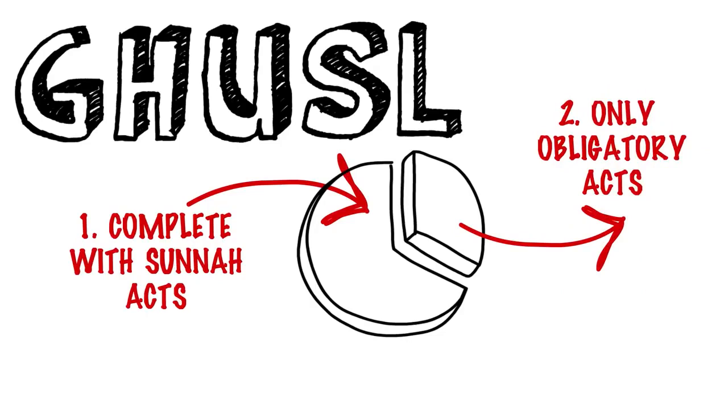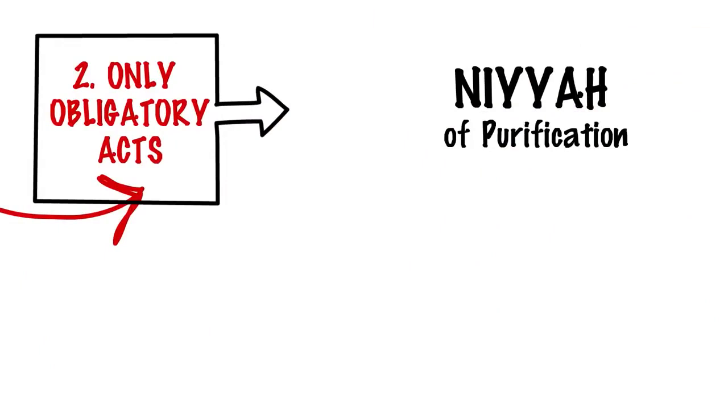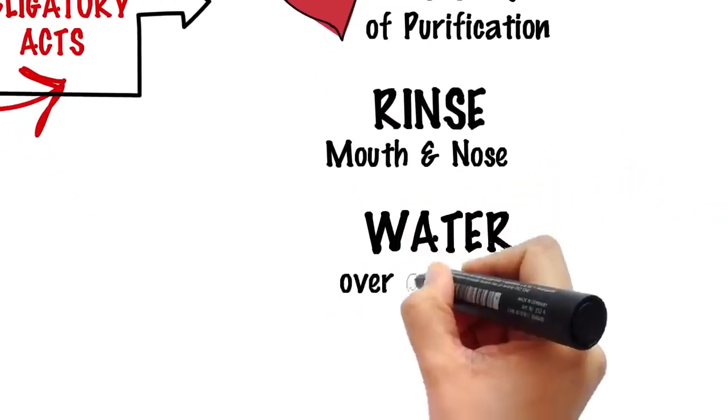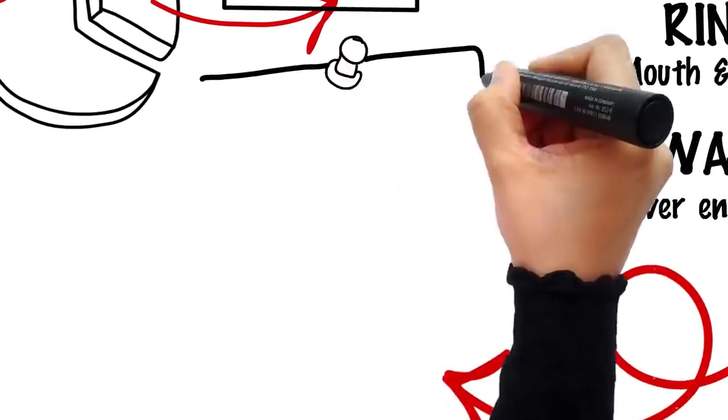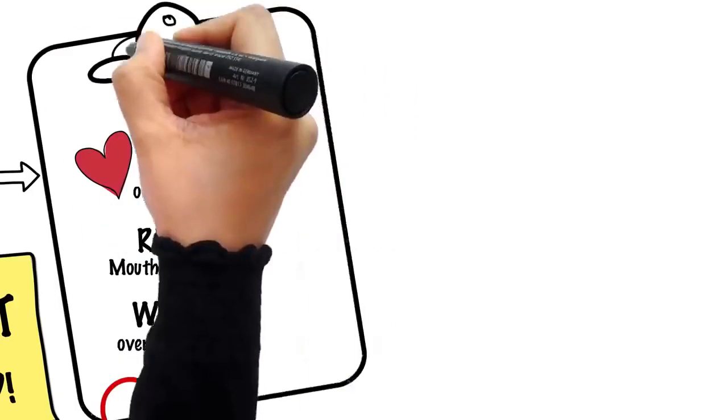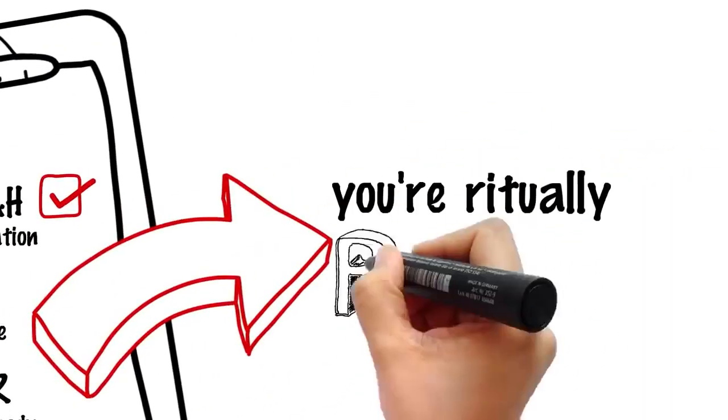So what are these obligatory acts of ghusl? Beforehand, niya—intention that you are taking this bath to purify yourself from the major ritual impurity. Rinsing your mouth and nose, and letting water run over your entire body at least once. Make sure it reaches every part of it, even your scalp under the thick hair. If you manage to do this much, then you have purified yourself from the major ritual impurity.